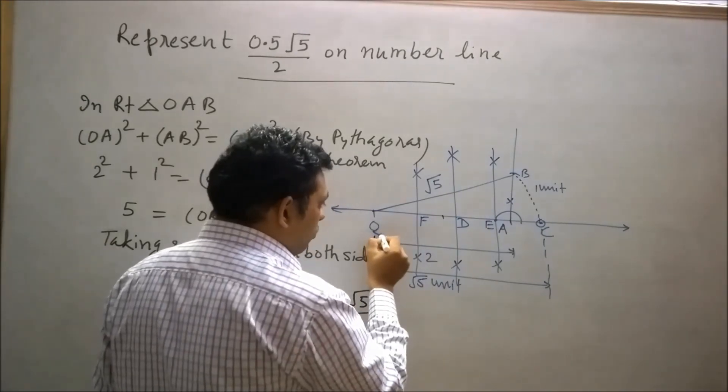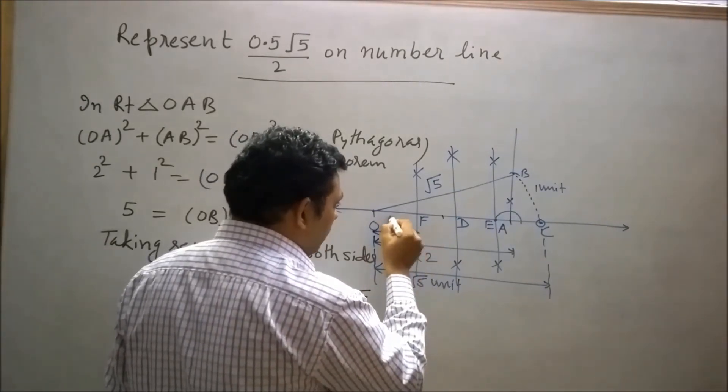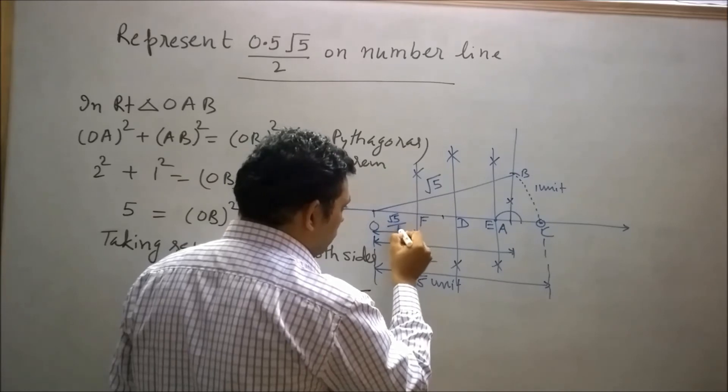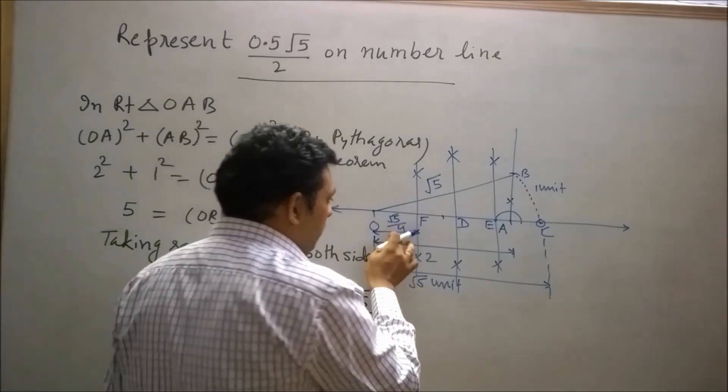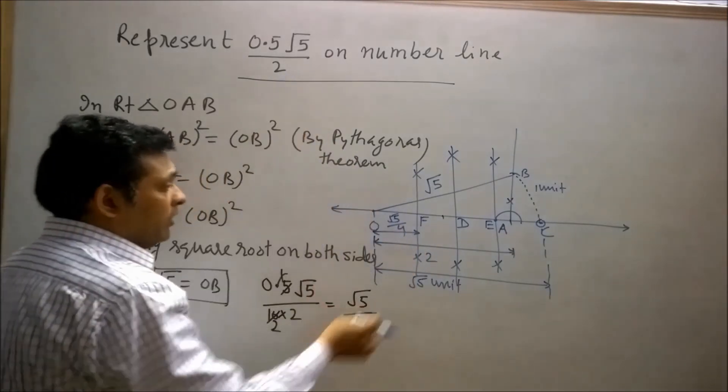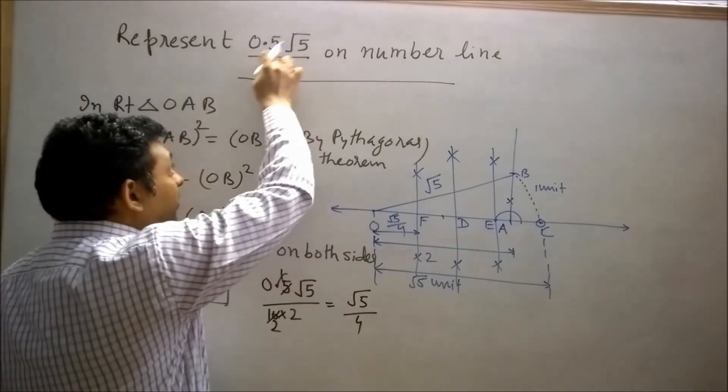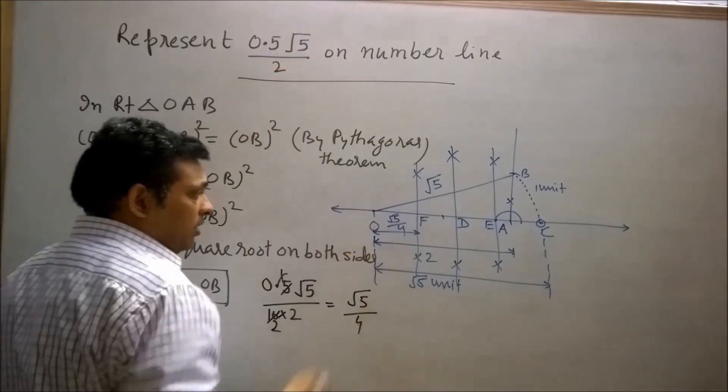So OF is equal to √5/4, and √5/4 is the given number. So we can say point F represents 0.5√5/2 on the number line.